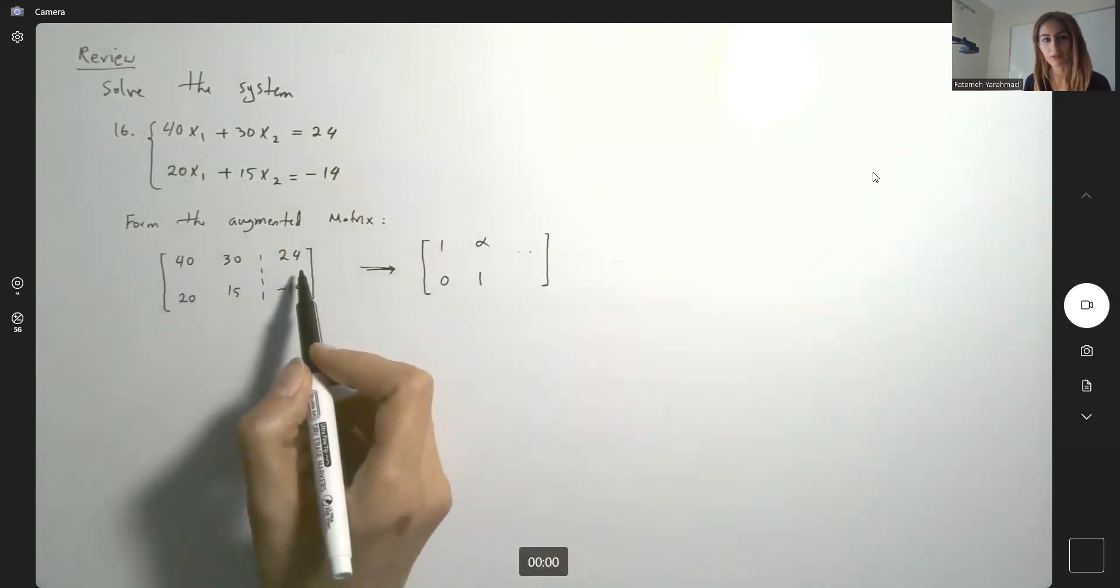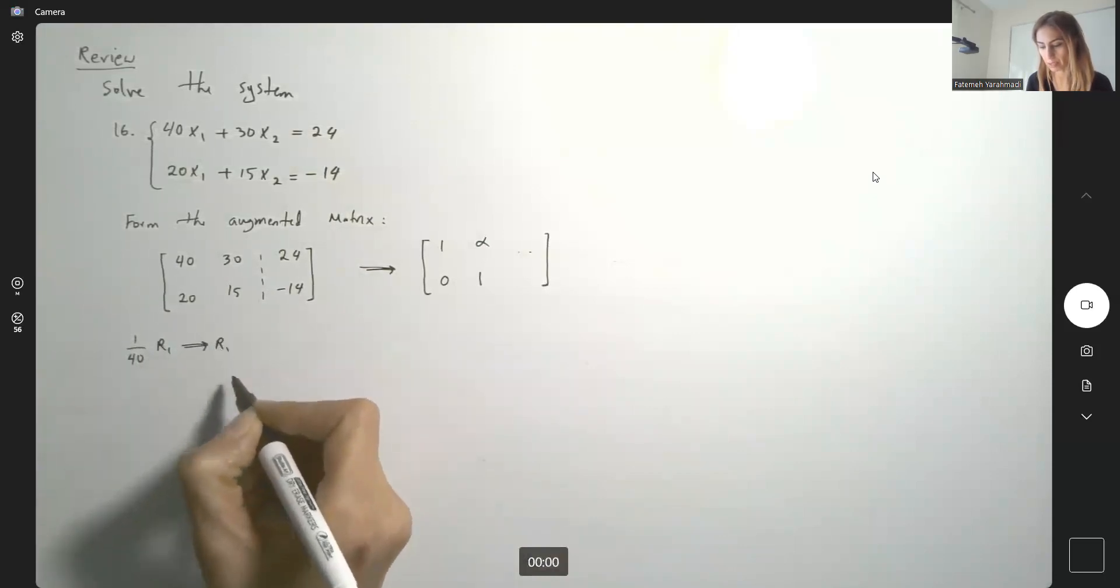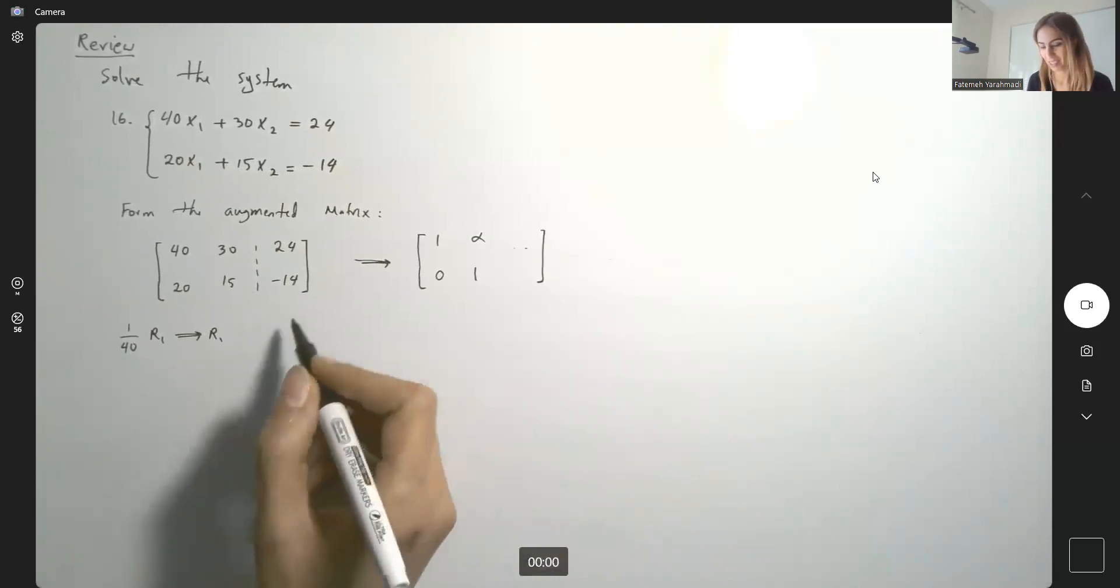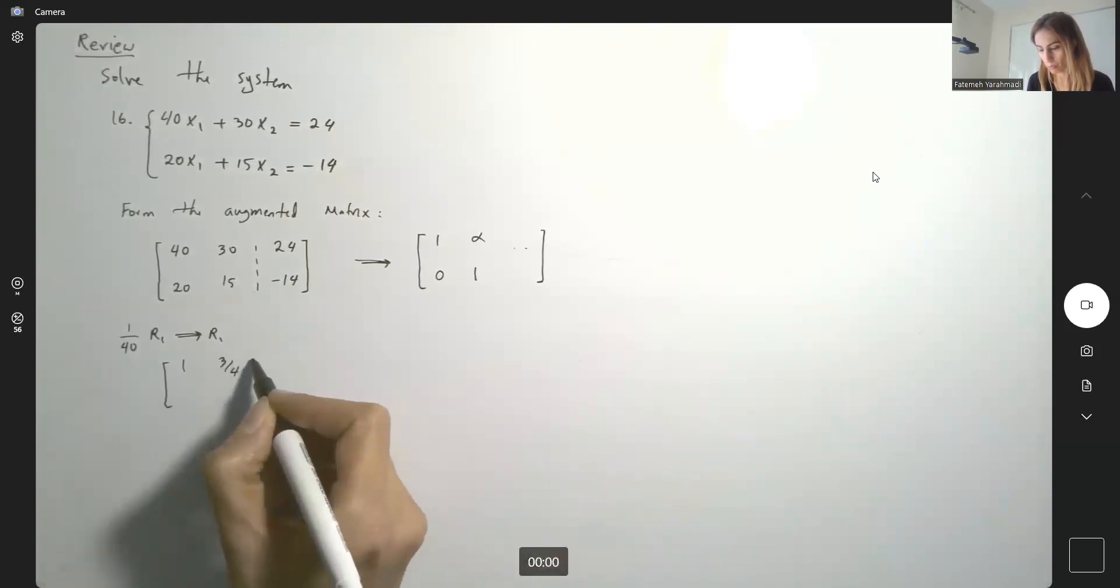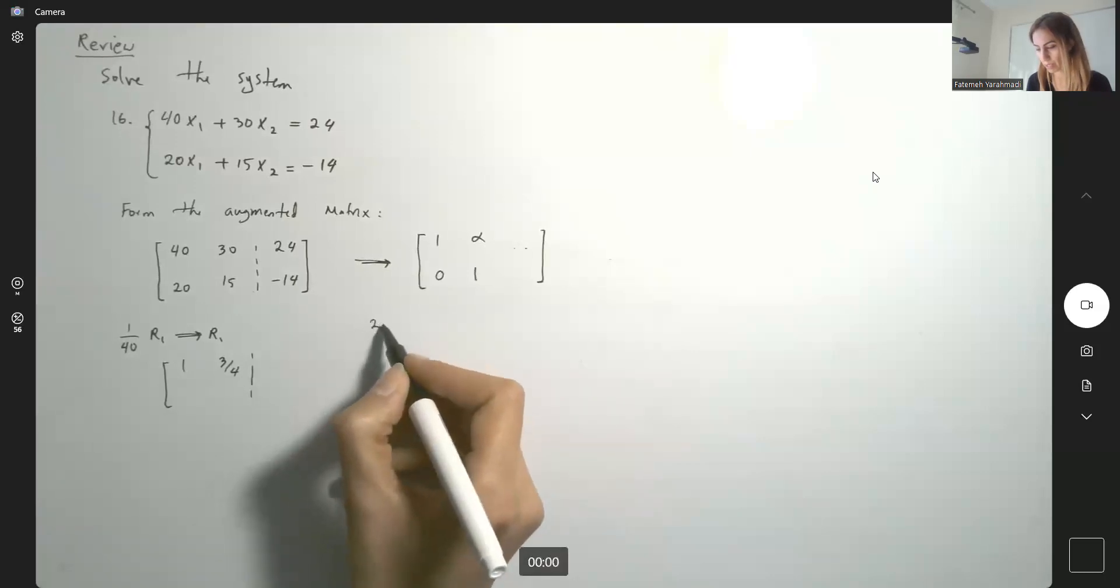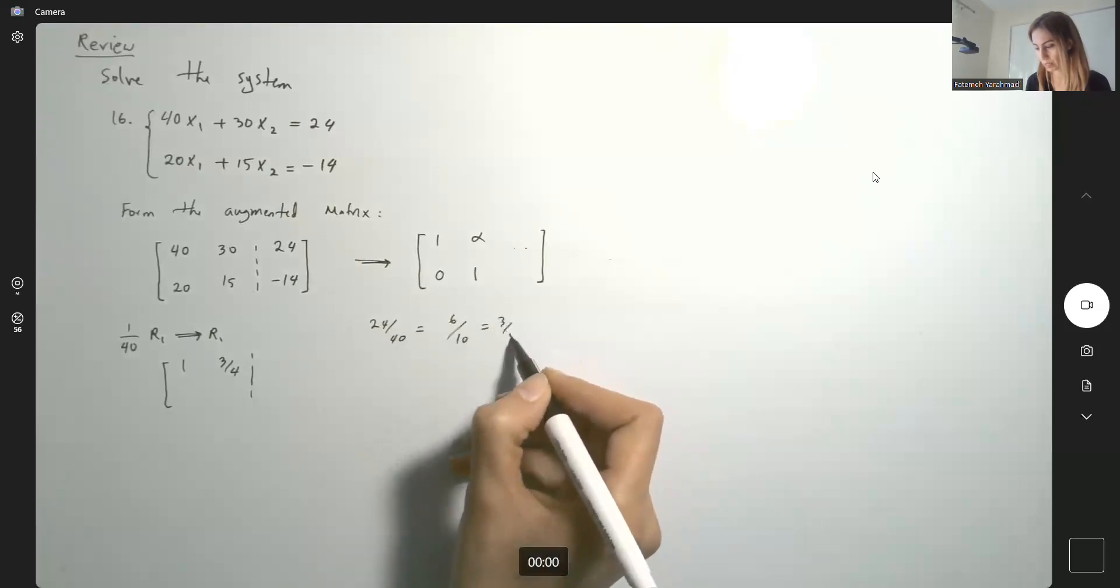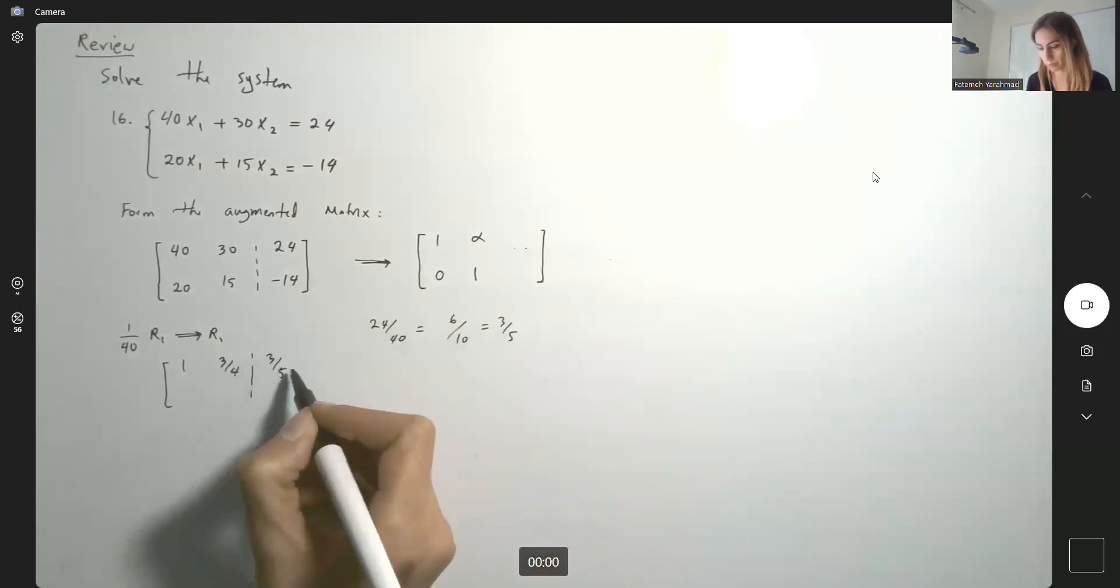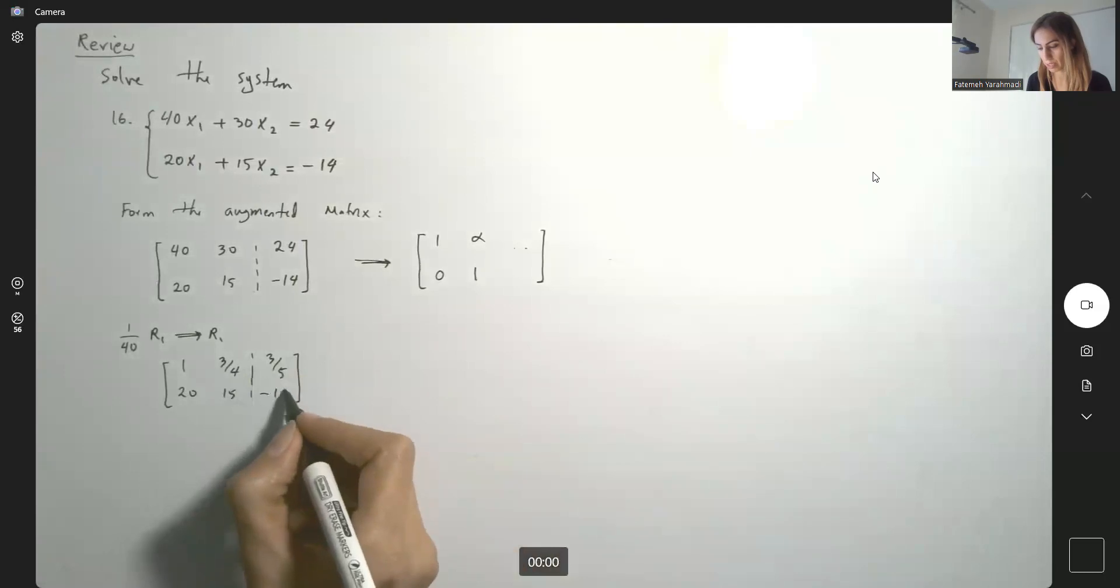We're going to divide the very first row by 40. 1 over 40 times R1 will be replaced for R1. Here we go. So, we get 1, and we have 3 over 4, and then we have 24 over 40. Let us simplify this as much as we can, and 3 over 5. You have a 20, you have a 15, then you have negative 14. So, so far so good.